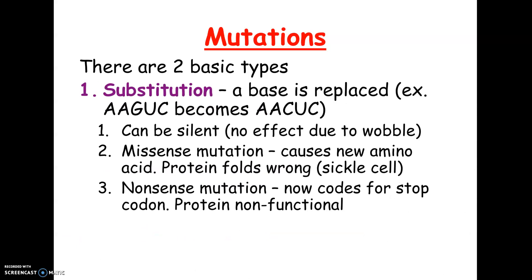There are two basic types. The first one is called a substitution — it's kind of self-explanatory. A substitution is where one letter gets substituted for another. So here, A-A-G-U-C becomes A-A-C-U-C. One letter of the code got changed.